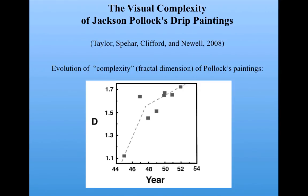A group of scientists looked at fractal dimension as applied to Jackson Pollock's drip paintings. They looked at the fractal dimension in these paintings and found that if you plot the year of the work versus their measurement of its fractal dimension, you get this kind of increase.